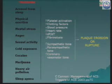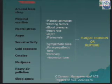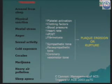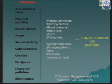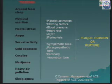What causes plaque erosion or rupture? There are several factors called triggers. These include arousal from sleep, physical exertion, mental stress, anger, sexual activity, cold exposure, cocaine and marijuana abuse — especially in the West — heavy pollution, and sleep apnea. All these are thought to bring about increased platelet activation, increase in clotting factors, higher blood pressure, higher heart rates, and reduced fibrinolytic activity. Alongside, there is heightened sympathetic tone, reduced parasympathetic tone, and increased coronary vasomotor tone — all of which cause plaque erosion or rupture.